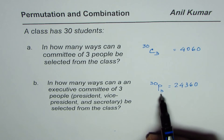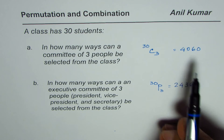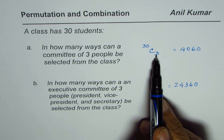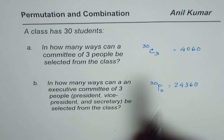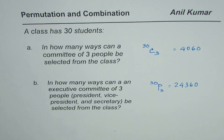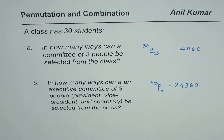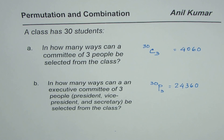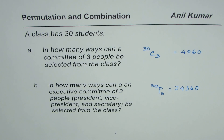We can always get this from here by multiplying by 3 factorial. So that is how these are related. I'm Anil Kumar, and I hope this set of videos is helping you to review the concepts of permutation and combination. Thank you, and all the best.